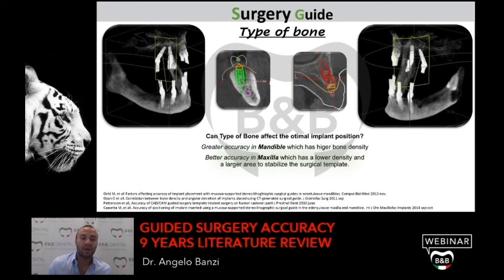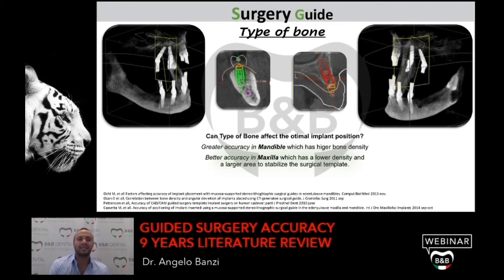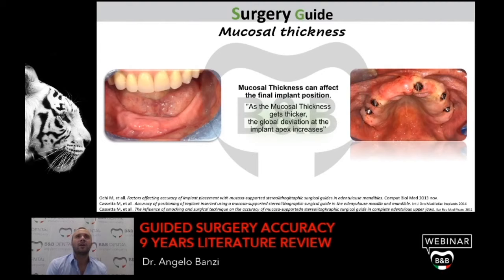For example, working in D1 or D2 bone (very high density) and placing a 3P or Evolution implant, I use a drill of the same diameter as the implant, and sometimes in D1 bone I also use the counter-seal drill. Know your system to reach the right implant position. I agree with Pettersson and Cassetta that higher accuracy is in the maxilla — not because of low bone density, but because of the large area to stabilize the surgical template, plus useful anatomical reference points like the frenulum and tuberosity.